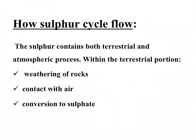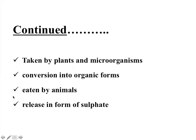The sulfur cycle contains both terrestrial and atmospheric processes. Within the terrestrial portion, they undergo weathering of rock with direct contact with the air, converting sulfate ions which are taken up by plants and microbes. These are converted into organic forms of sulfur, which are then eaten by animals and released into the ecosystem as sulfate ions. In this way, the sulfur cycle continuously performs all the processes of mineralization, oxidation, reduction, and incorporation in our ecosystem.